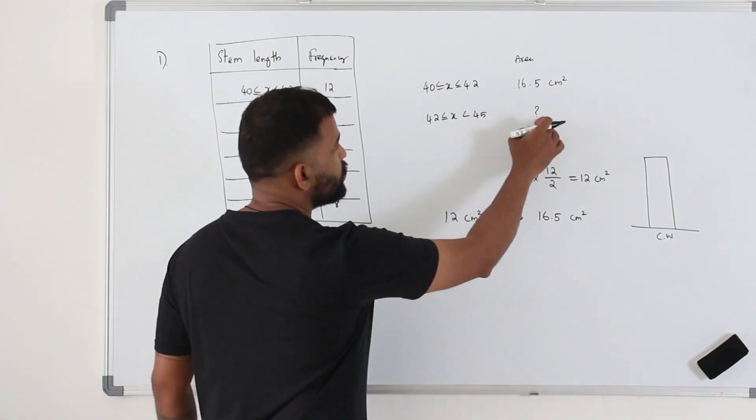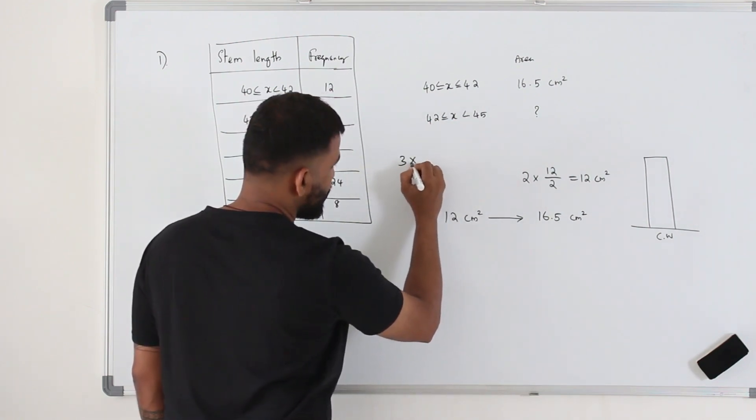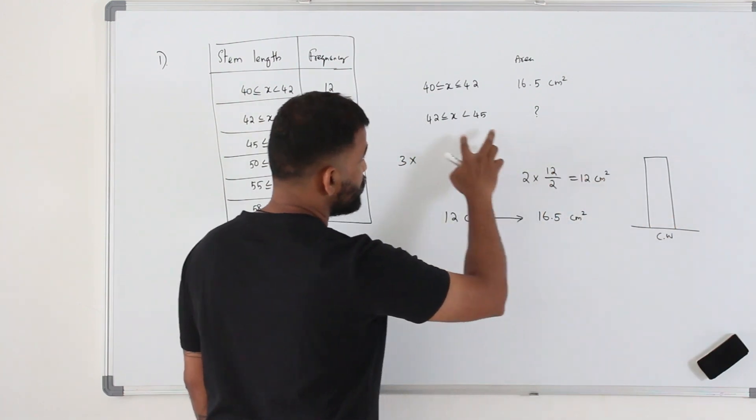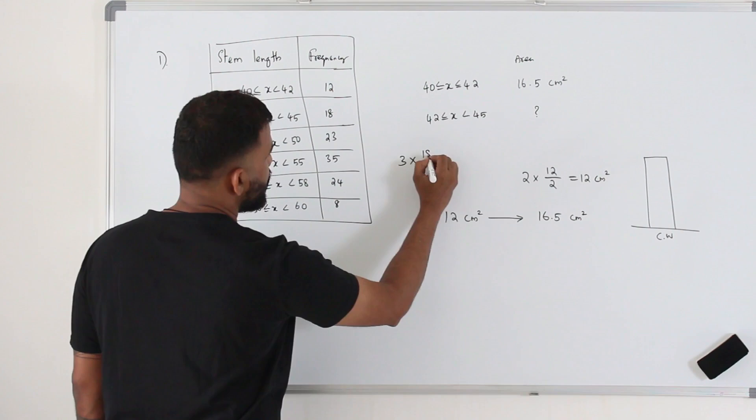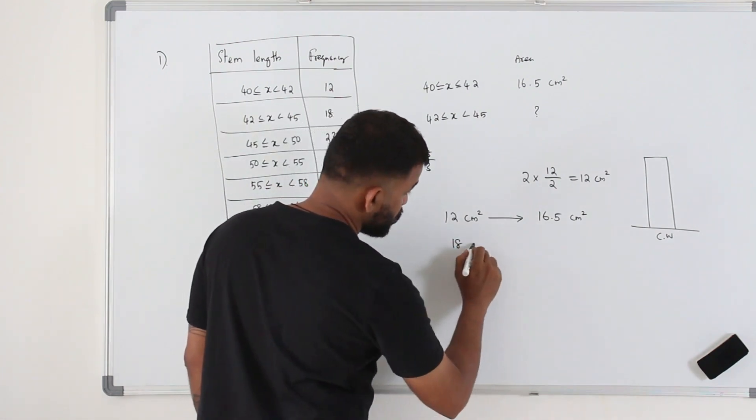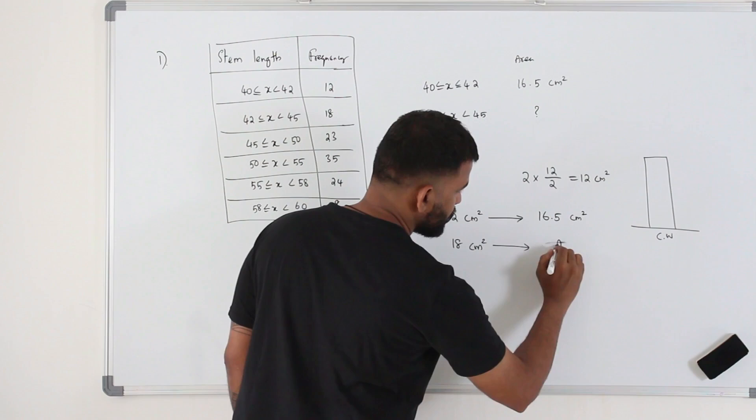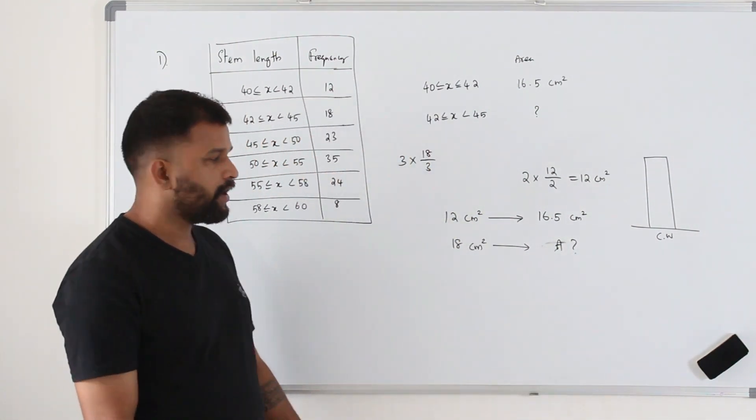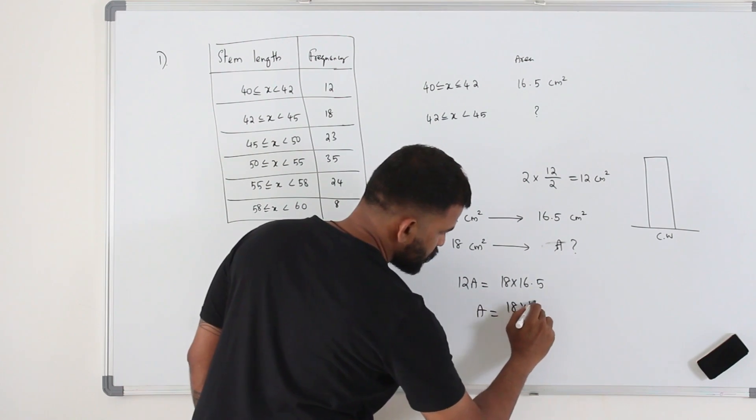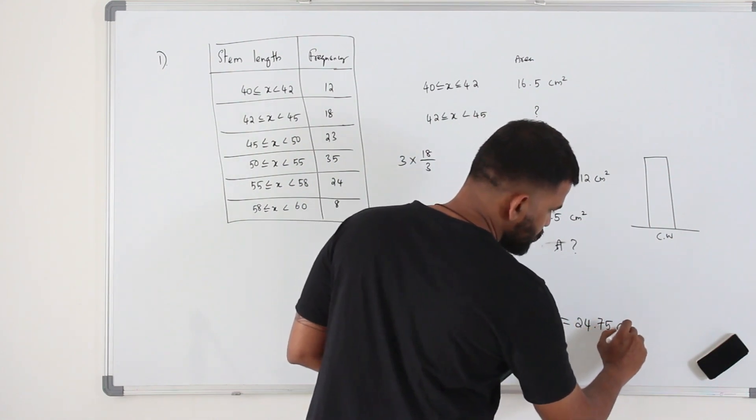Now for this one, we need to find the area of the bar. So here the class width is 45 minus 42, which is 3. The height would be frequency density for this class interval. The frequency density would be 18 over 3, frequency divided by class width. So basically it's just 18. The area of the bar is supposed to be 18 centimeters square. But what is the actual area? You can just cross multiply and find A. So 12A equals 18 times 16.5. So A is 18 times 16.5 divided by 12. The answer is 24.75 centimeters square.